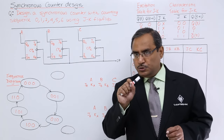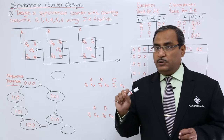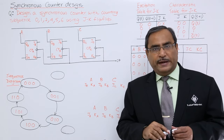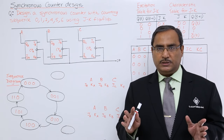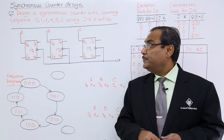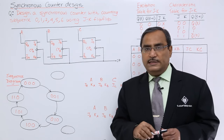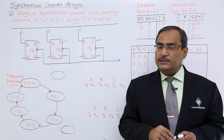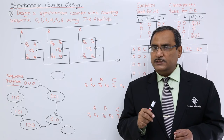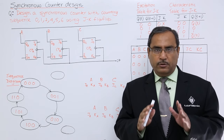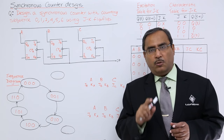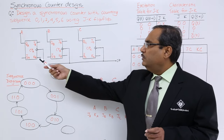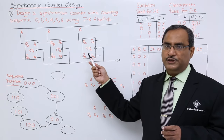We note that the question specifies a synchronous counter and JK flip-flops. The counting sequence is 0, 1, 2, 4, 5, 6, where the maximum number is 6. To represent 6 we need 3 bits (1, 1, 0), so this counter design will require 3 JK flip-flops, which I have drawn accordingly.